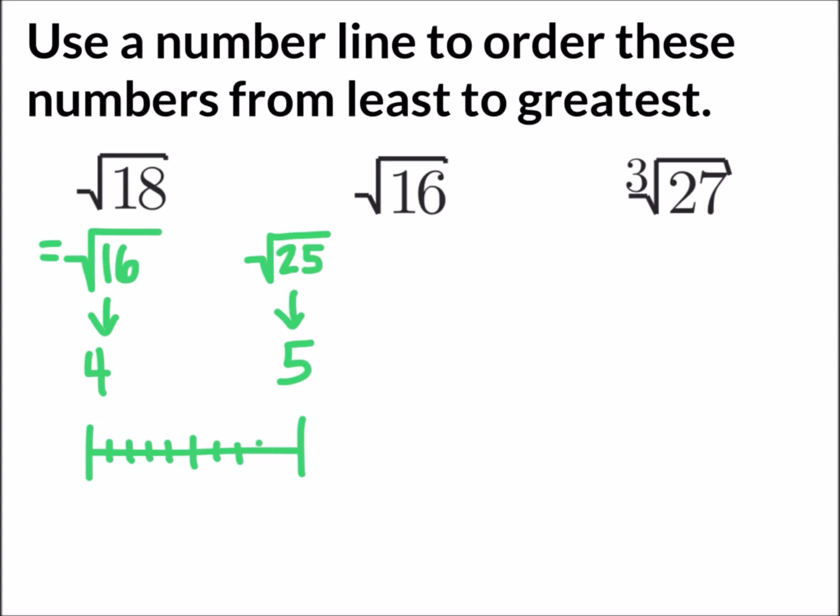Draw out your number line representing the spaces between 4 and 5. We notice that 18 is much closer to 16 than it is to 25, so I'm going to put my point somewhere around 4.2 and say that the square root of 18 is approximately 4.2.